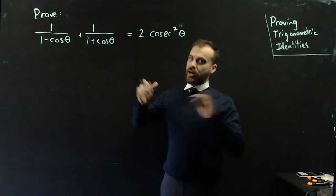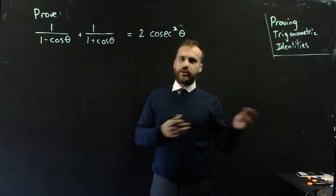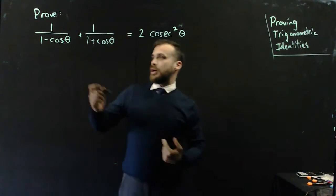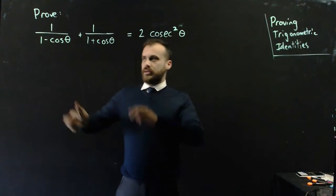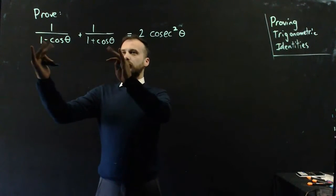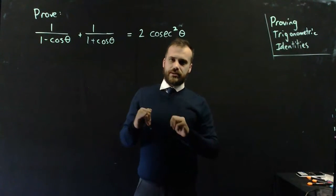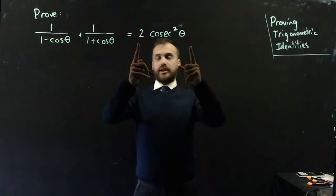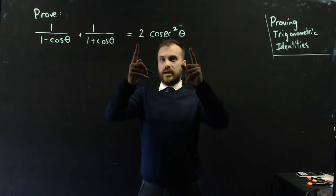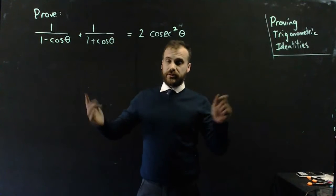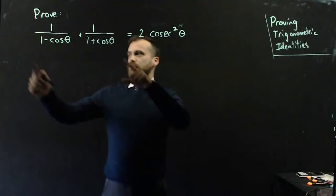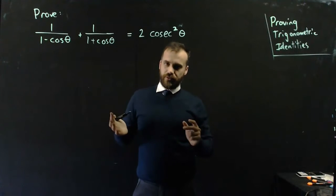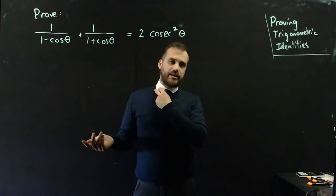This is one of hundreds of identities that you could find online if you googled trigonometric identities. Now, the way to prove this — we're saying all of this is equal to all of this. If we can make this side look like that side and they look the same, then we've proven it. That's the basic idea.